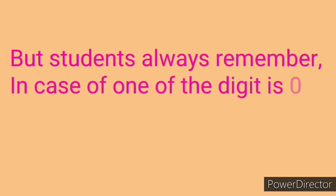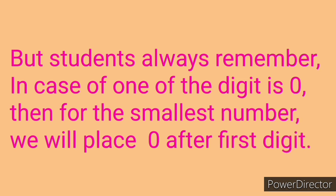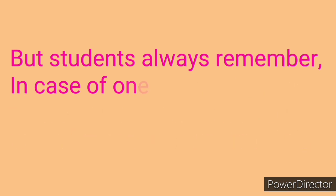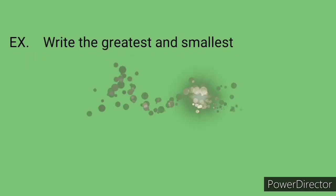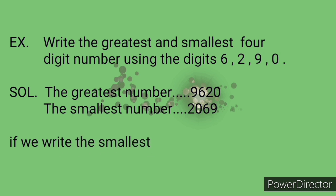But students, always remember, in case one of the digits is 0, then for the smallest number, we will place 0 after first digit. Now I explain this with an example. So here is the example. Write the greatest and smallest 4 digit number using the digits 6, 2, 9, 0.